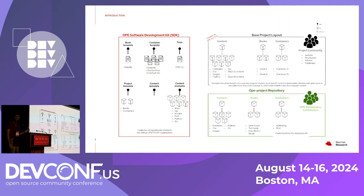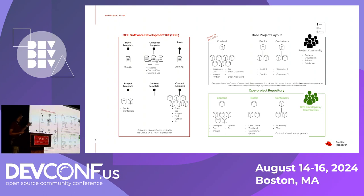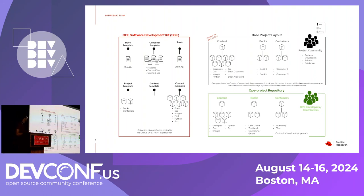This is just an outline of the repositories we use in OPE. We have different repositories like a tools repository, a container template, project template, etc. We have this OPE CLI tool which pulls from these different repositories and seeds a new base OPE project. A base OPE project has a content directory that contains examples and templates for the textbook — it will have images, Python, any code you want run inside the textbook — as well as the source content, and then books and containers directories where the actual books and containers are stored.